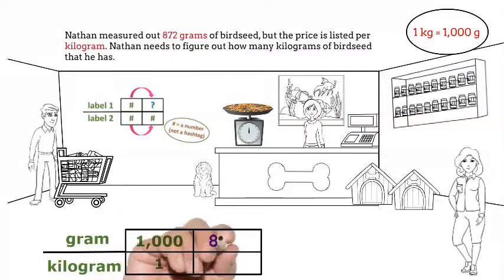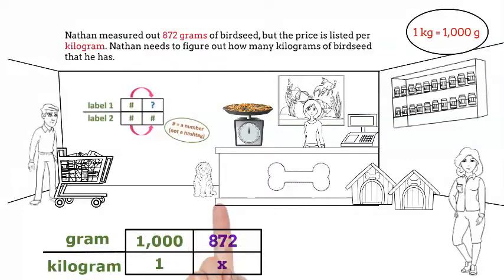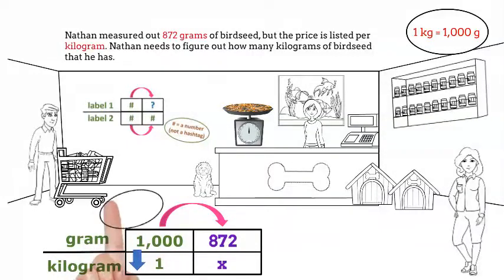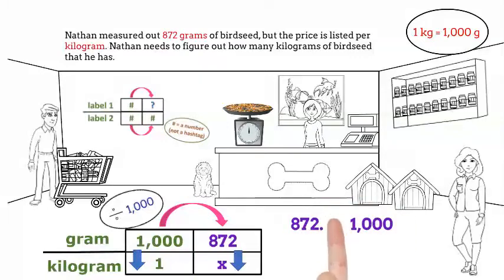The 872 is grams so it will go in the numerator. X will be in our denominator. Is there something easy that we can multiply or divide 1,000 by to get 872? Let's look at the patterns vertically. What can I do to 1,000 to get 1? I can divide by 1,000. Now we need to divide 872 by 1,000 and we'll have our answer.